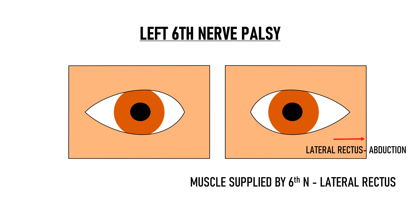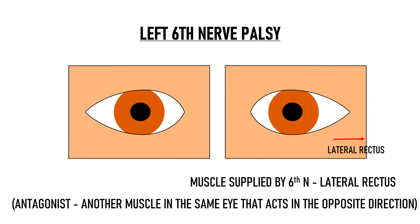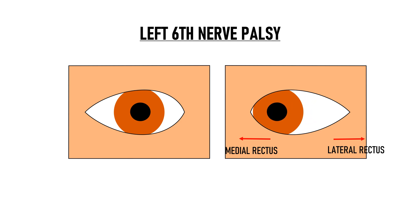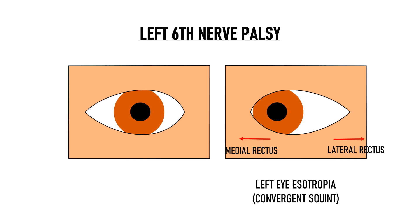Now, which muscle is the antagonist of the lateral rectus muscle? The antagonist of a muscle is another muscle in the same eye that acts in the opposite direction. Therefore, the antagonist of the left lateral rectus would be the left medial rectus. Lateral rectus pulls the eye temporally, while medial rectus pulls it nasally. So, in sixth nerve palsy, when the lateral rectus muscle is underacting, there is no opposition to the action of its antagonist — the medial rectus — and the eye is pulled inwards. So, the patient presents with a left eye esotropia, or a left eye convergent squint.